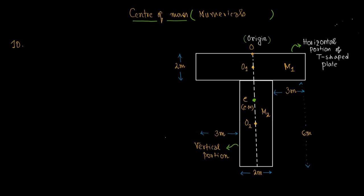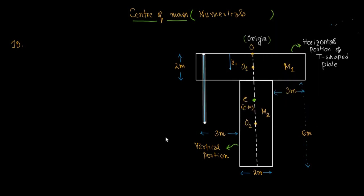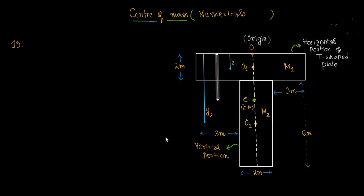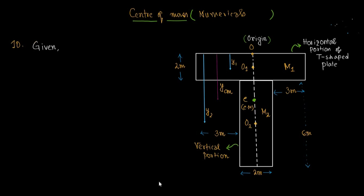The center of mass C lies along the line joining O1 and O2. We assume O, the highest point, as the origin. The distance of point O1 from the origin O is y1, the distance of O2 from origin O is y2, and the distance of the center of mass C from the origin O is ycm.